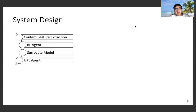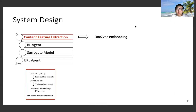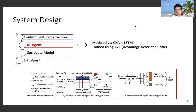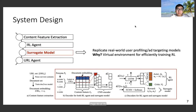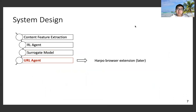Next, we describe the system design of Harpo. Harpo consists of four modules. The first is the content feature extraction module, which converts each URL into a Doc2Vec embedding. The second module is the RL agent, where the policy network is modeled as a convolutional neural network and LSTM; we train our agent using A2C. We provide more technical details in our paper. The third module is the surrogate model, which replicates real-world user profiling and ad targeting models, trained as a virtual environment for efficient RL training so we don't need to frequently interact with real-world models. The last module is the URL agent, implemented as a browser extension.